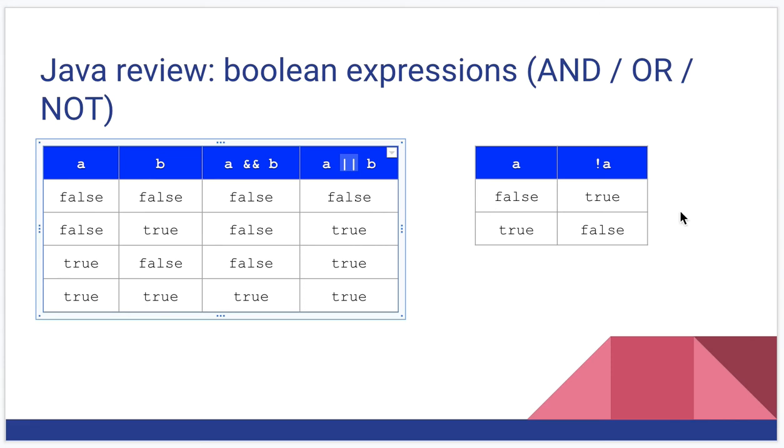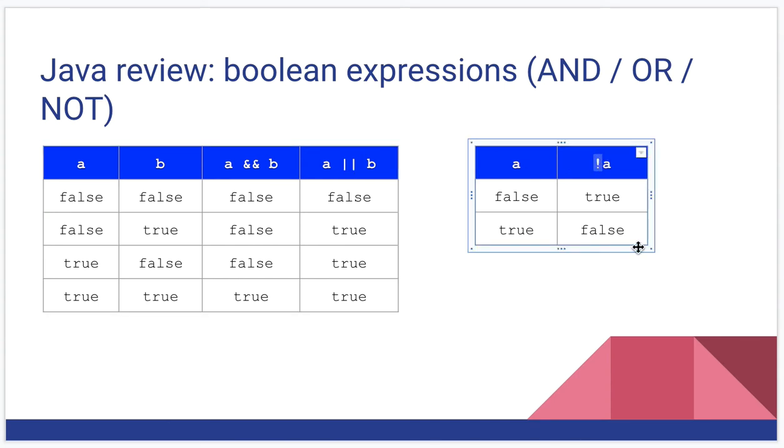And if you look on your keyboard, it's usually right above the enter key or the return key as a vertical line. You usually have to shift to make it, to type it. And then not was an exclamation point, also called a bang, immediately in front of a Boolean expression.